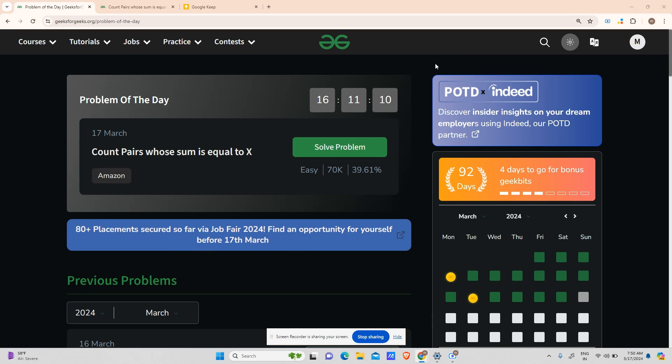Hey guys, welcome back to my channel. Hope you're doing extremely well. This is Mascot, and today I'll be solving another problem of the day. Today's problem is 'Count Pairs Whose Sum is Equal to X.' The problem is of easy type but is still asked in a good company, Amazon.